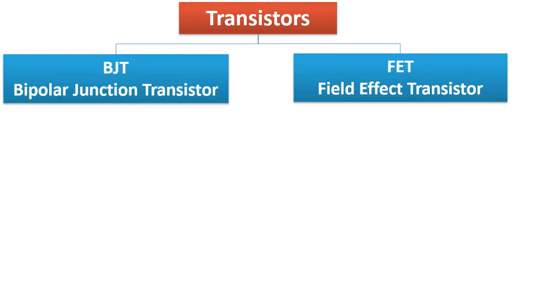Transistors are classified into two groups: BJT and FET. These expressions come from abbreviations formed from the initials of their English names. BJT comes from the acronym Bipolar Junction Transistor, while FET comes from the abbreviation Field Effect Transistor.